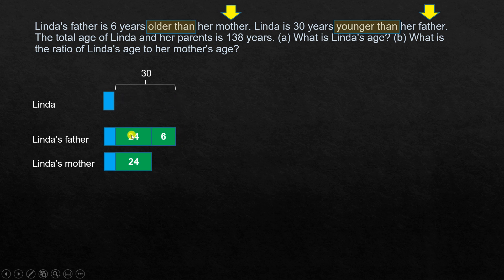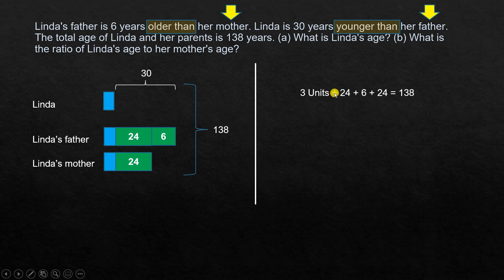From drawing the model, we also establish the known values for Linda's father and mother. The total age of Linda and her parents is 138 years, so this whole model equals 138. We can clearly see three units of the same size plus some known values. That gives us: three units plus 24 plus 6 plus 24 equals 138.